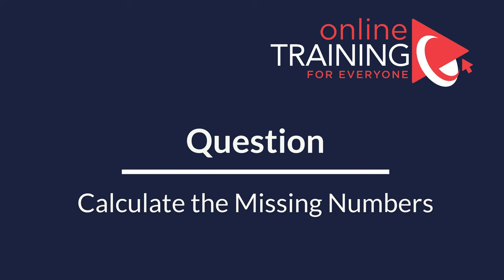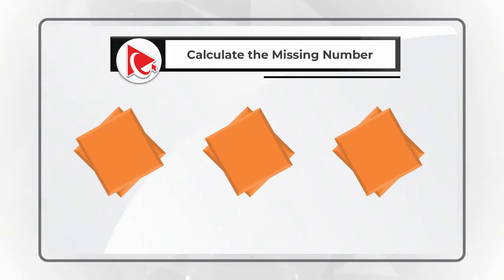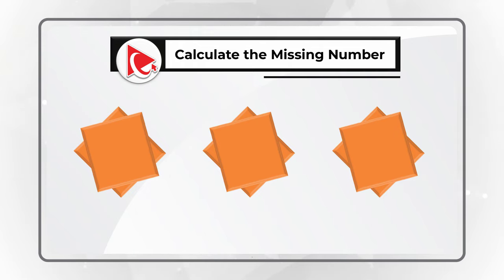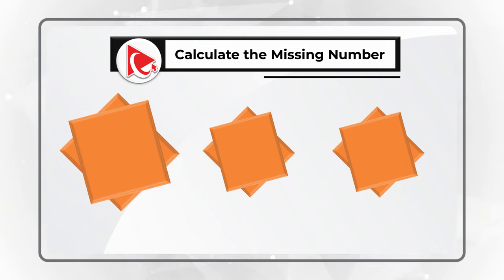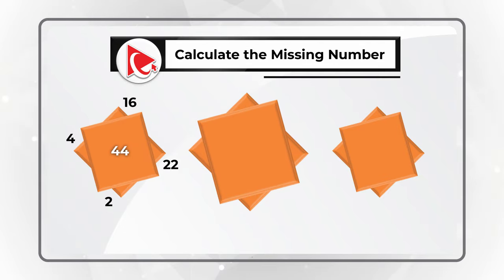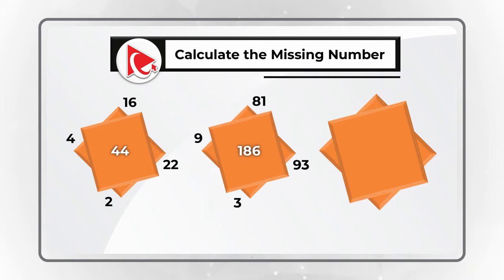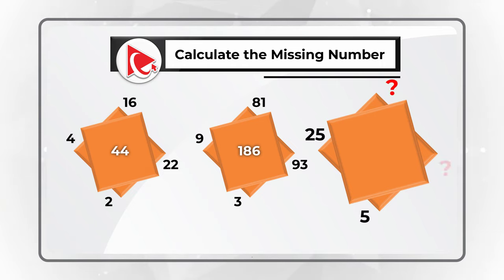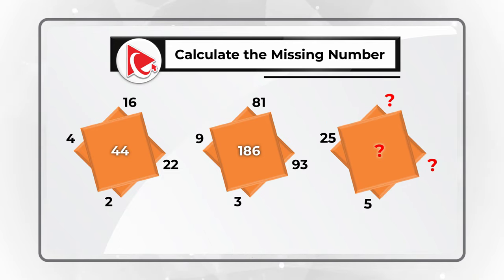I hope you will be as amazed as I am when looking at this question. You're presented with three sets of diamonds. Each set contains numbers outside and inside the diamonds. The first diamond has numbers 2, 4, 16, 22, and 44 in the middle. The second set contains numbers 3, 9, 81, 93, and 186 inside. The last set has two numbers visible — 5 and 25 — and three numbers missing.